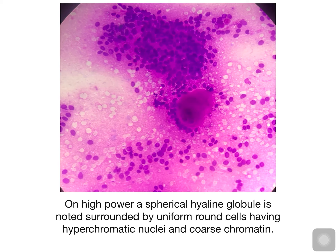The hyaline globule is surrounded by uniform round cells having hyperchromatic nuclei and coarse chromatin. My diagnosis on FNAC is adenoid cystic carcinoma, because of the hyaline globules and round uniform cells surrounding the hyaline globules.